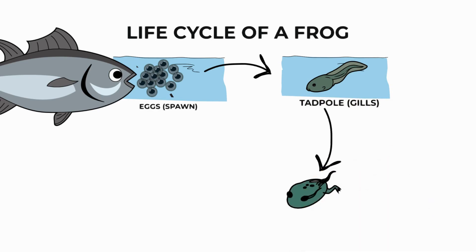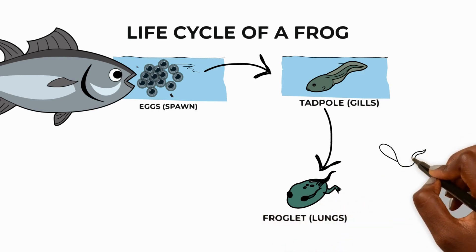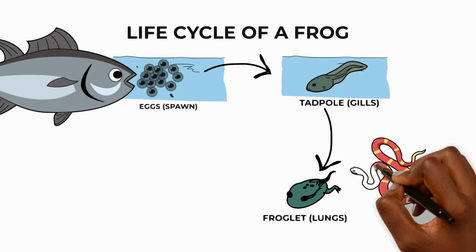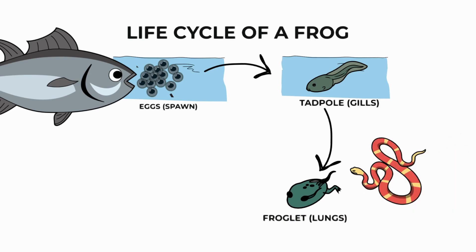Next the tadpole grows front and back legs and the tail shrinks away. Now it uses lungs to breathe and lives on land. However, it's in danger of being eaten by snakes, lizards and birds.